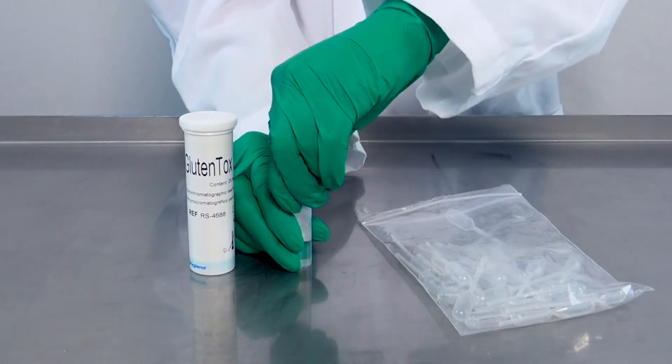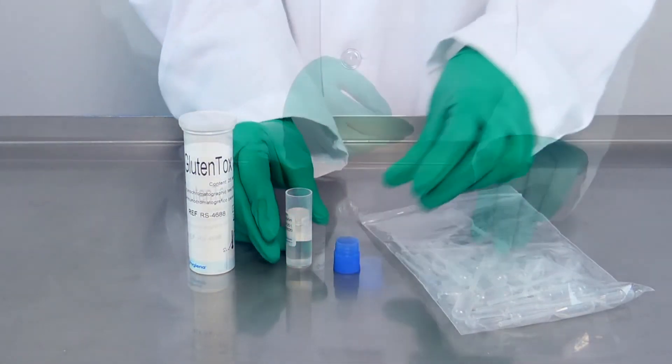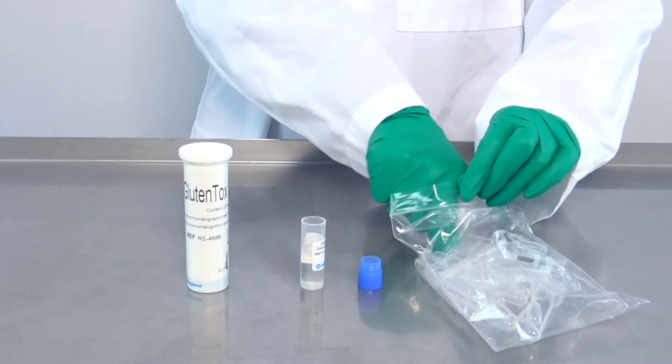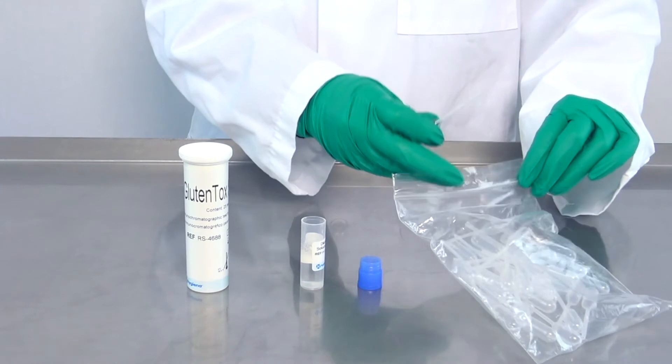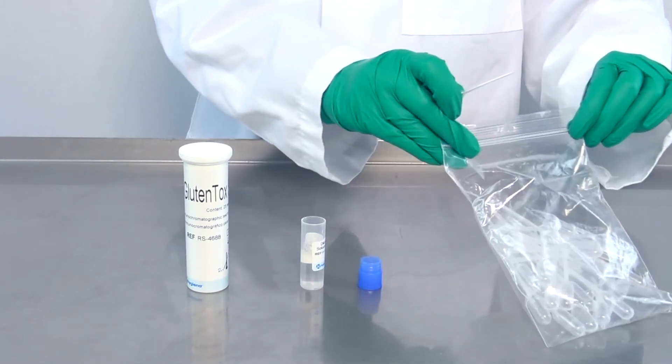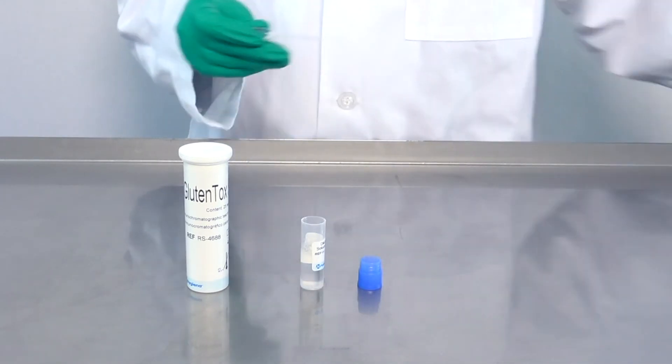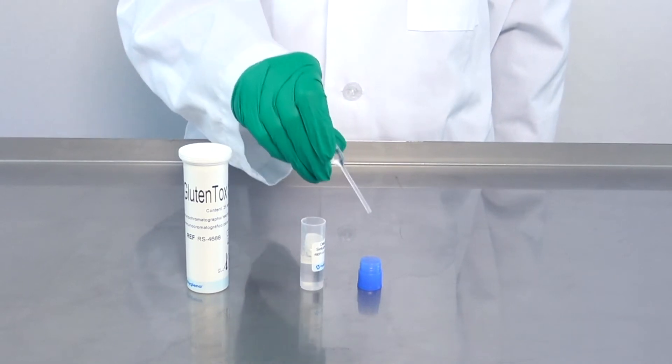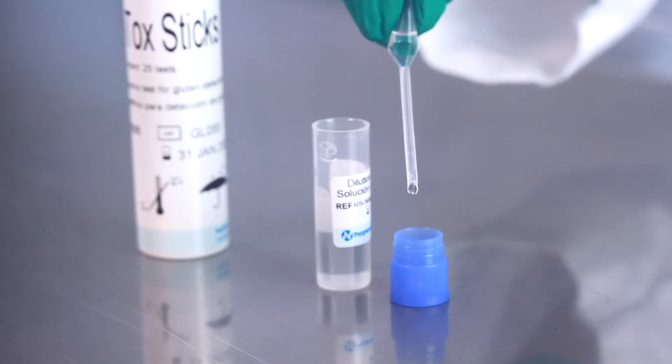Open the dilution vial with the blue cap. Place the cap upside down on a clean surface. Use a new disposable plastic pipette to place five to six drops from the dilution vial into the blue cap.